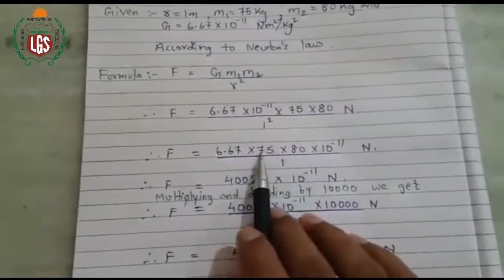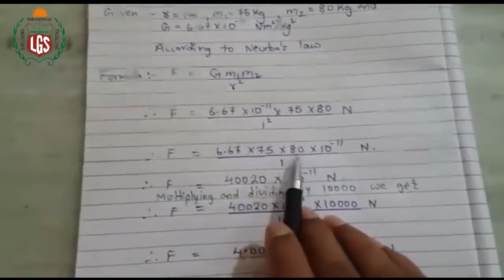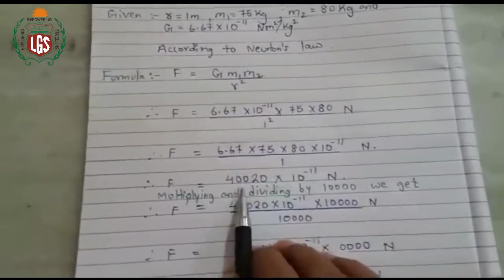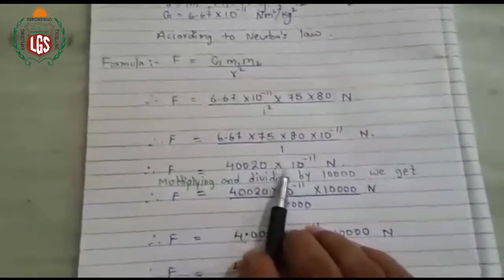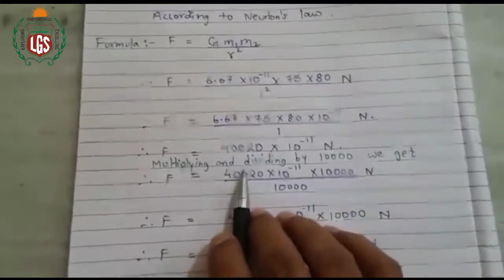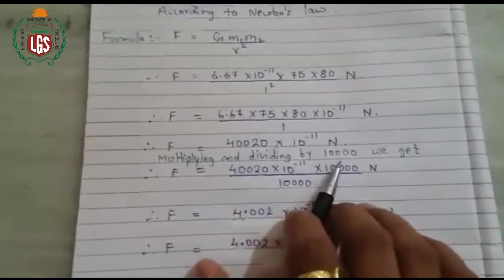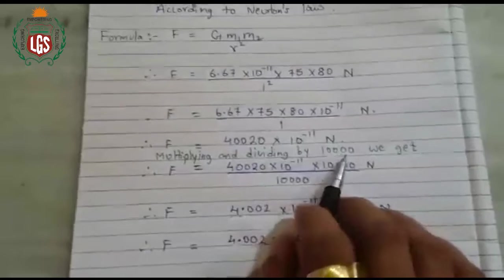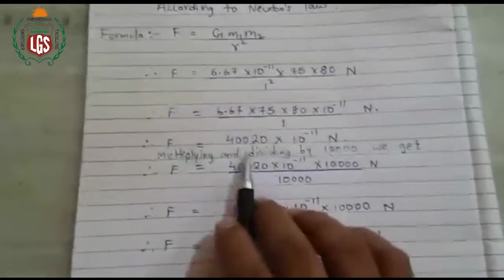See here, once you calculate this 6.67 into 75 into 80, you will get answer 40020, multiply by 10 raise to minus 11 Newton. Now, multiplying and dividing by 10,000 we get. Why are we multiplying and dividing by 10,000?